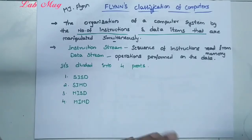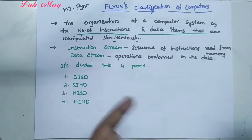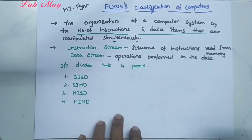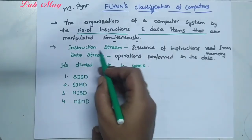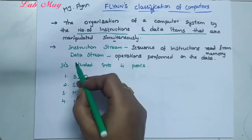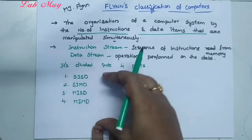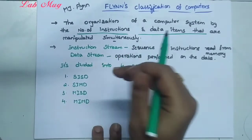Flynn's classification of computers has four categories. In these four categories, two main words are used: instruction stream and data stream. Using these two concepts, we will look at the four categories.